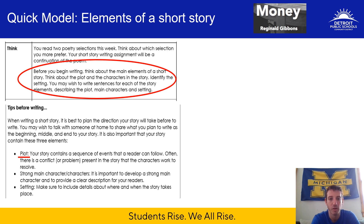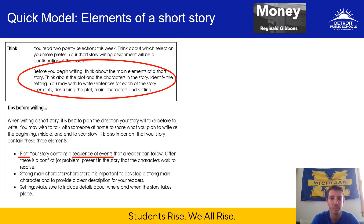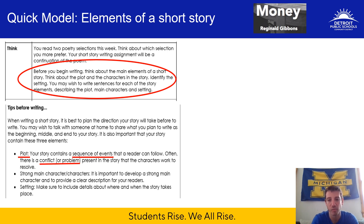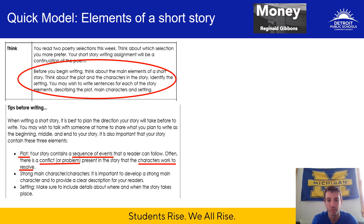Let's start with plot. Plot is basically a sequence of events — what happens in the story. Sequence doesn't necessarily mean it happens in chronological order; sometimes the time sequence is out of order, jumping back and forth. Regardless, events happen in a logical order that makes sense to the reader. Often there's a conflict or problem — it doesn't have to be a physical conflict, sometimes it can be an internal conflict. For the most part, in a story, the character is working to resolve that conflict, though you may not always see a full resolution.